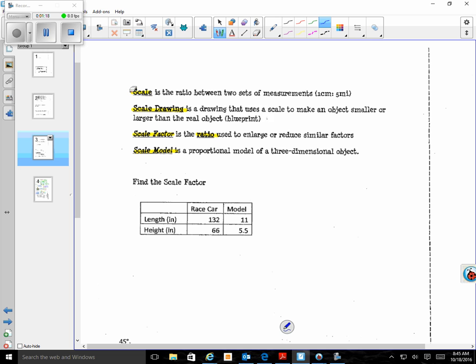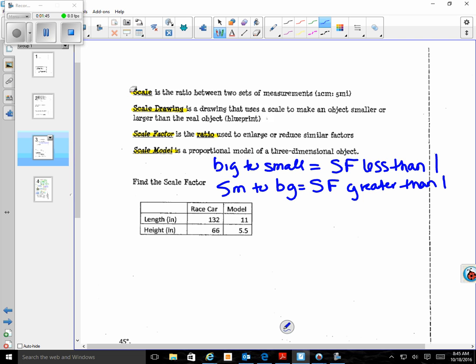I'm going to write a couple of notes real quick. If you are going big to small, your scale factor is less than 1. And if you're going small to big, your scale factor is greater than 1. You'll see what I'm talking about in just a minute, but those are your general rules of the type of number you were multiplying by. Your numbers can be decimals or fractions, so you've got to remember your decimal fraction rules.